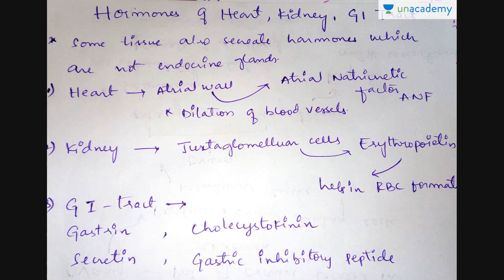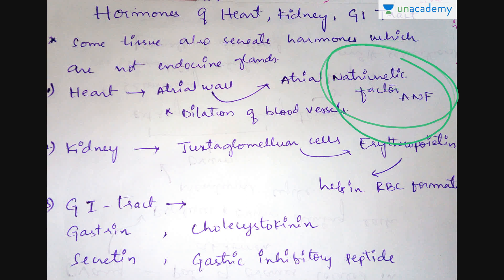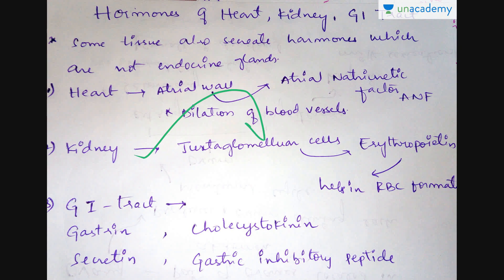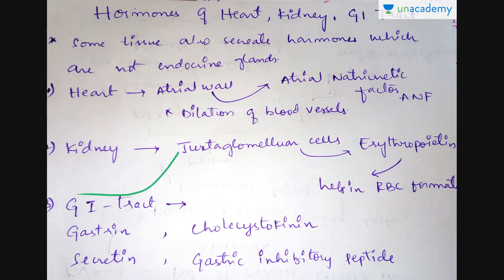Apart from dedicated endocrine glands, some other tissues also secrete hormones. In the heart, the atrial wall secretes atrial natriuretic factor, or ANF, a hormone which helps in dilation of blood vessels. In the kidney, a type of cells called juxtaglomerular cells secrete erythropoietin, which is very important in the formation of red blood cells. In the gastrointestinal tract, many hormones are secreted that help in digestion and reabsorption of food — these include gastrin and secretin.